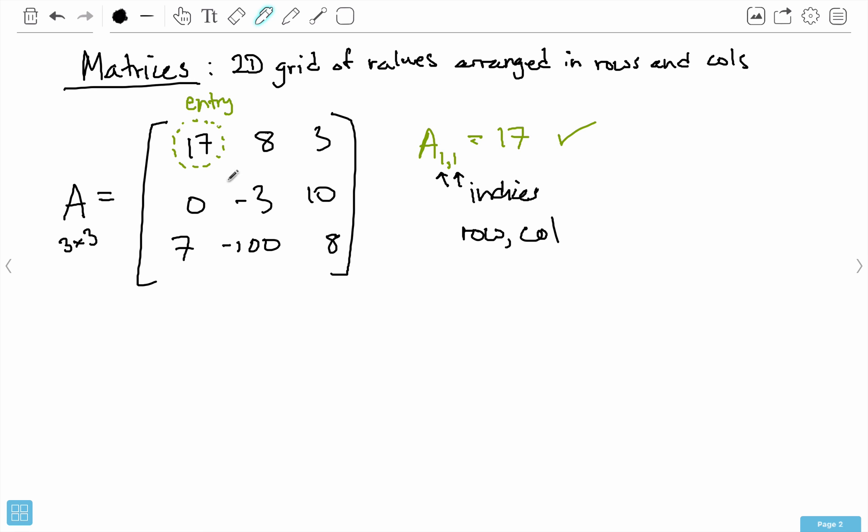I'm going to write down an entry using this notation, and I want you to pause the video and see if you can figure out which entry I'm referring to. I'm going to say A sub 2,1 equals, and see if you can figure it out. Okay, so A sub 2,1 means I go to the second row, which is this row here, and the first column, which is 0.